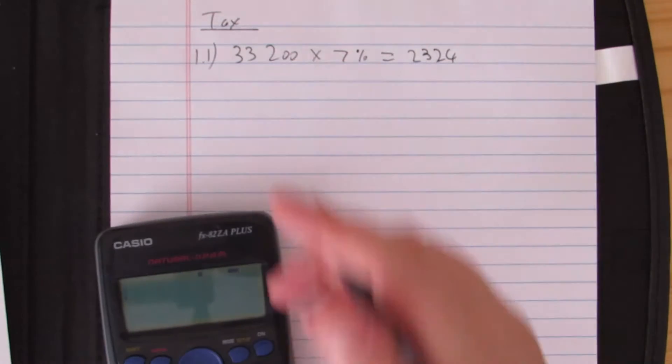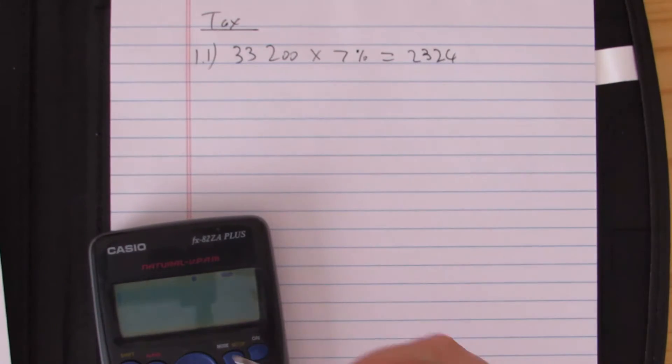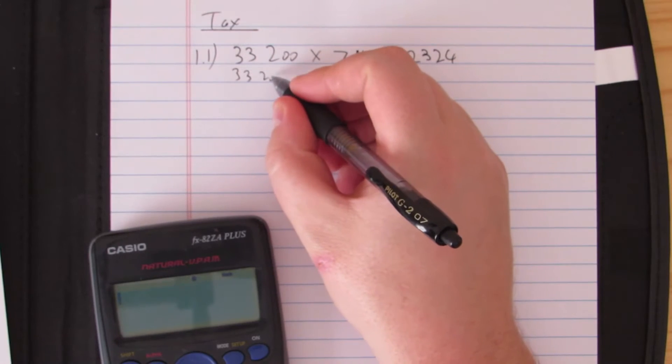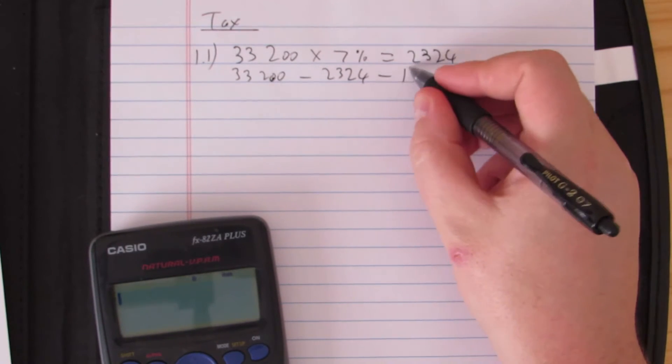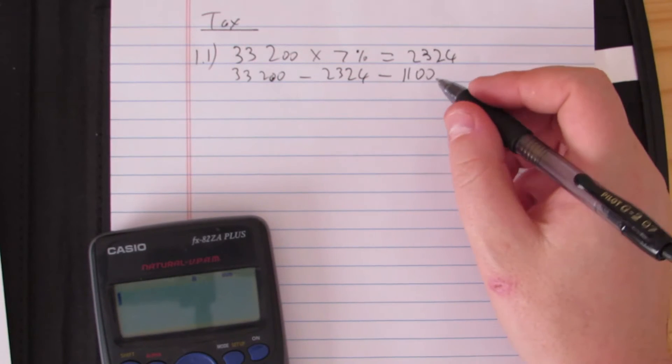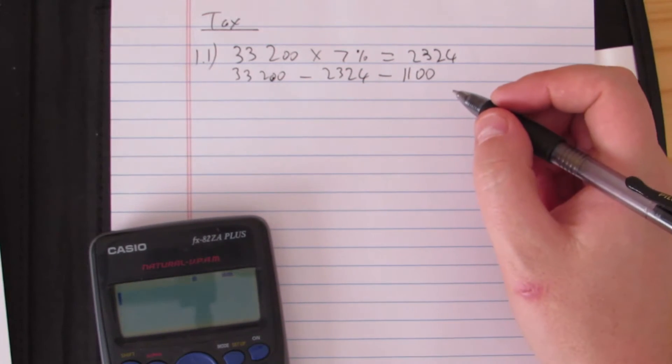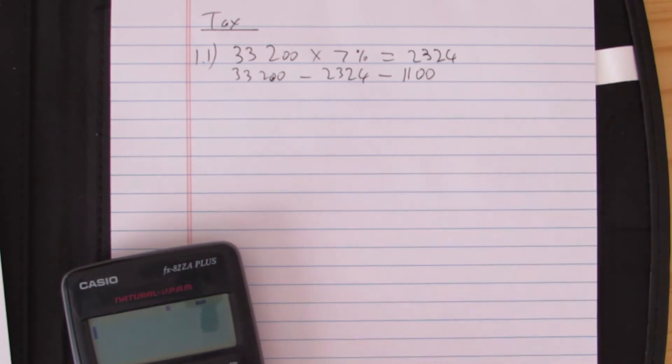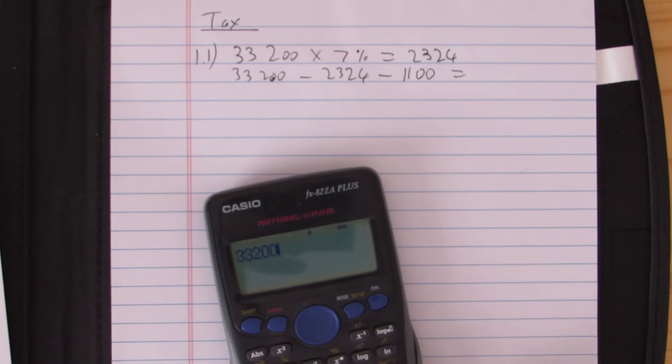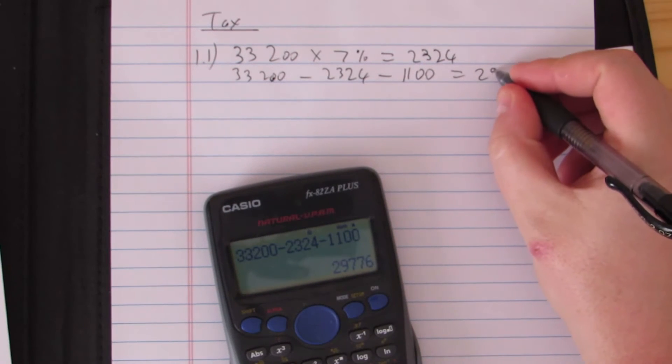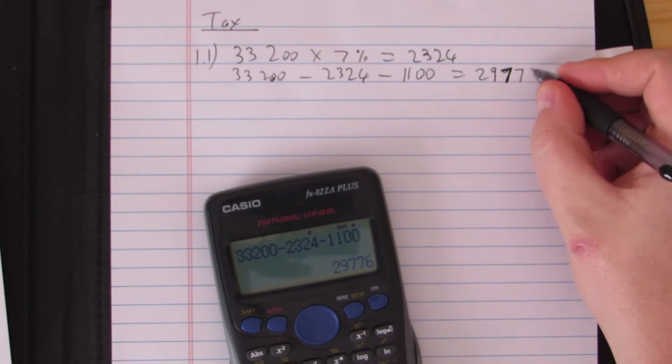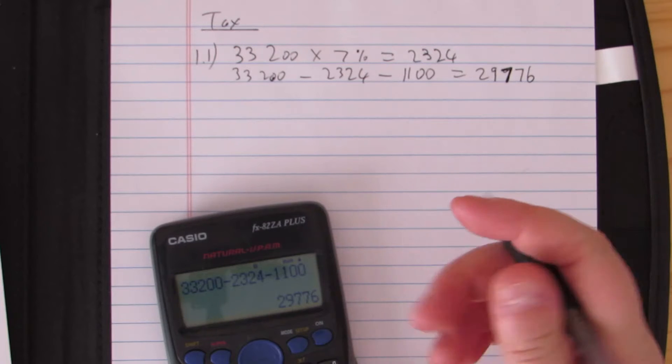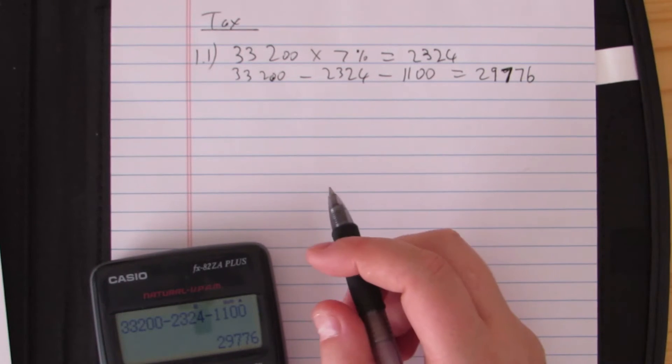We're going to take his salary of 33,200 and subtract from it his pension, 2,324 rand, as well as his retirement annuity contributions. Remember, retirement annuity is a type of private pension fund that we use. So 33,200 minus 2,324 minus 1,100 will give us a monthly taxable income of 29,776 per month.